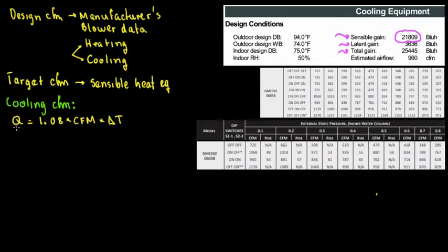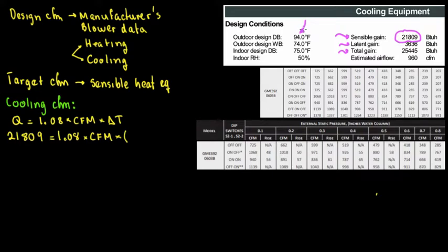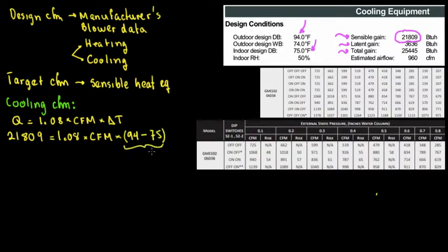My sensible heat is 21,809 BTUs per hour. That equals 1.08 times cooling CFM times delta T. The delta T is based on ASHRAE outdoor design temperature minus indoor design temperature — in this case, 94°F minus 75°F, which gives a temperature drop of 19 degrees Fahrenheit.